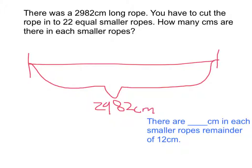And you have to cut the rope into 22 equal smaller pieces. [Counting marks] Nine, ten, eleven, twelve, thirteen, fourteen, fifteen, sixteen, seventeen, eighteen, nineteen, twenty, twenty-one, and twenty-two. Yep, and to find out how much this is...